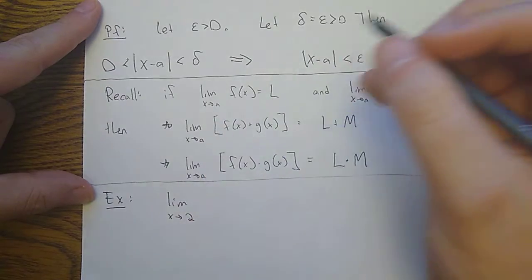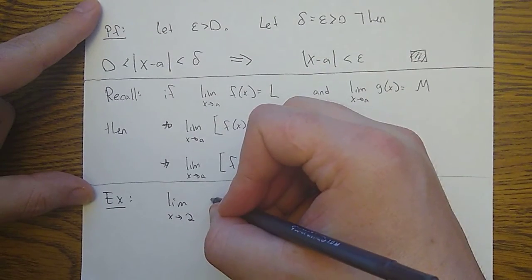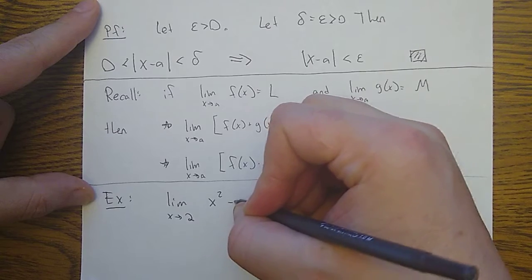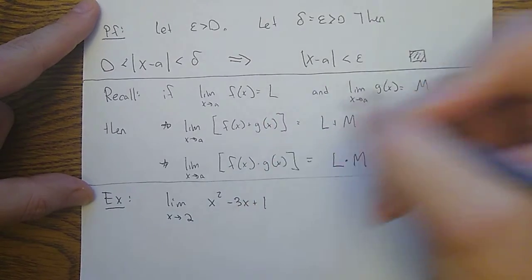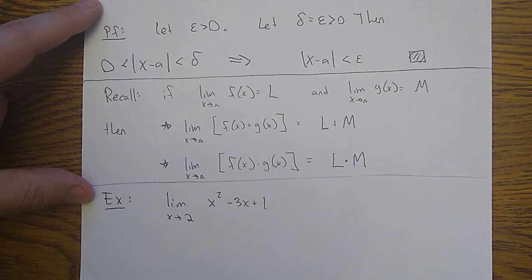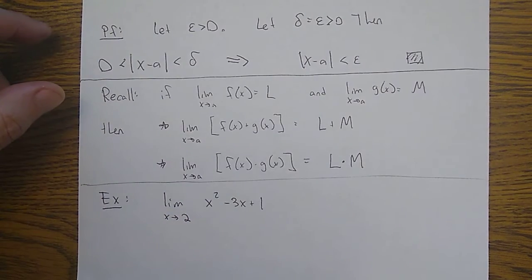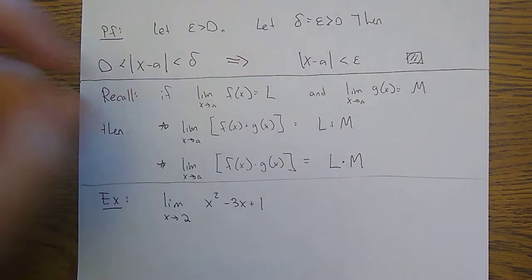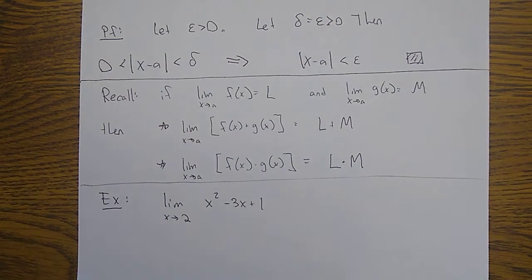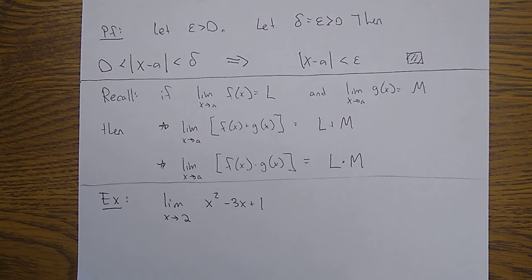Why don't I do the limit as x goes to 2 of x squared minus 3x plus 1. You probably already know the answer — it's just what you get from plugging in 2: 4 minus 6 plus 1, which is negative 1. So we expect to get negative 1, but this is all using calc 1 intuition that is not necessarily well justified for us right now in this class.